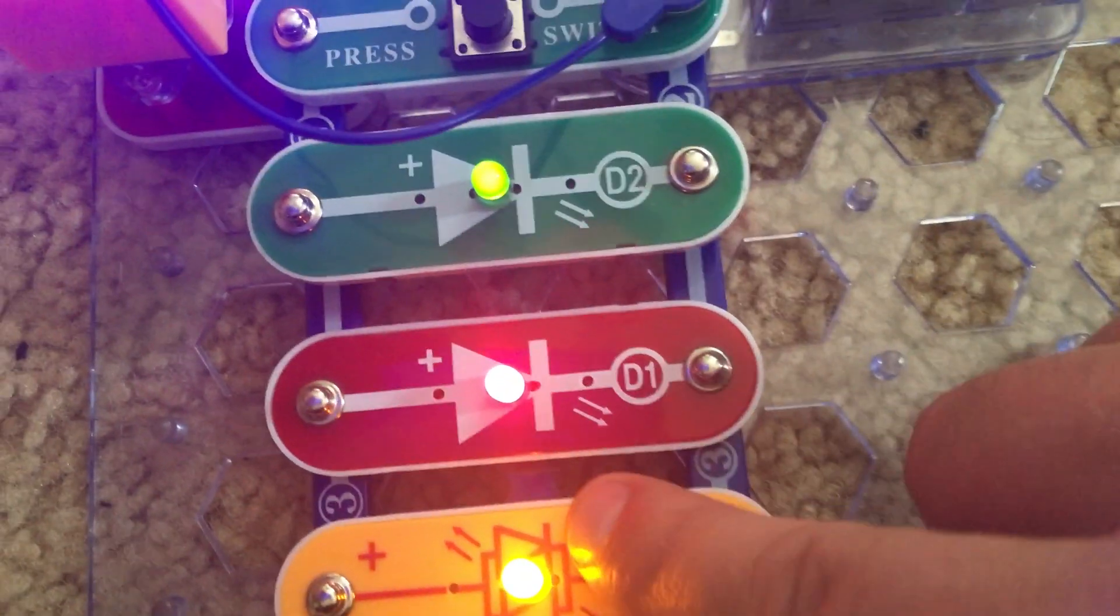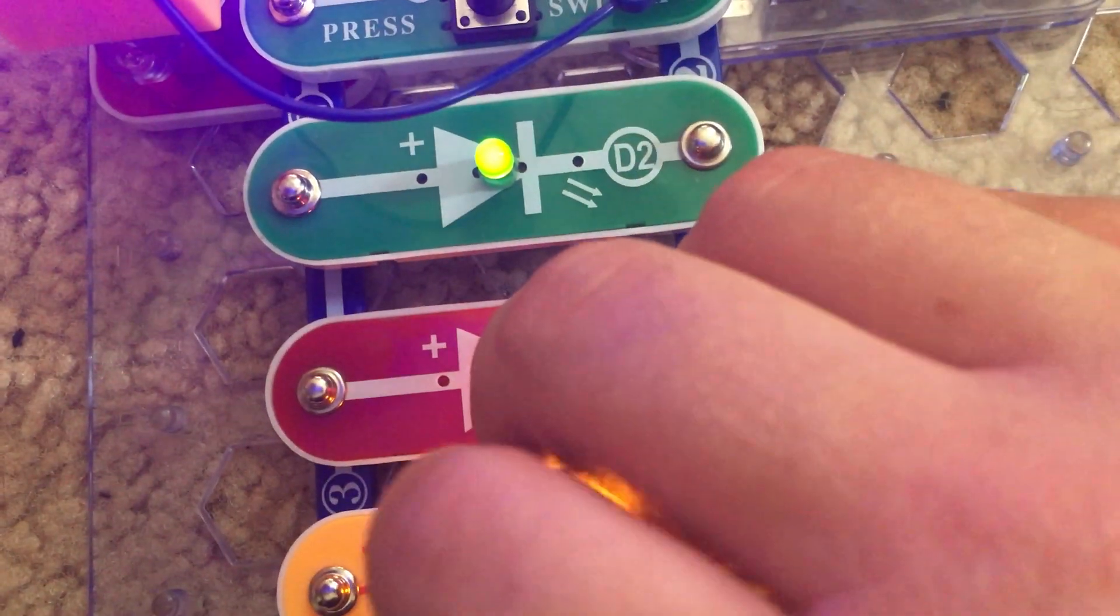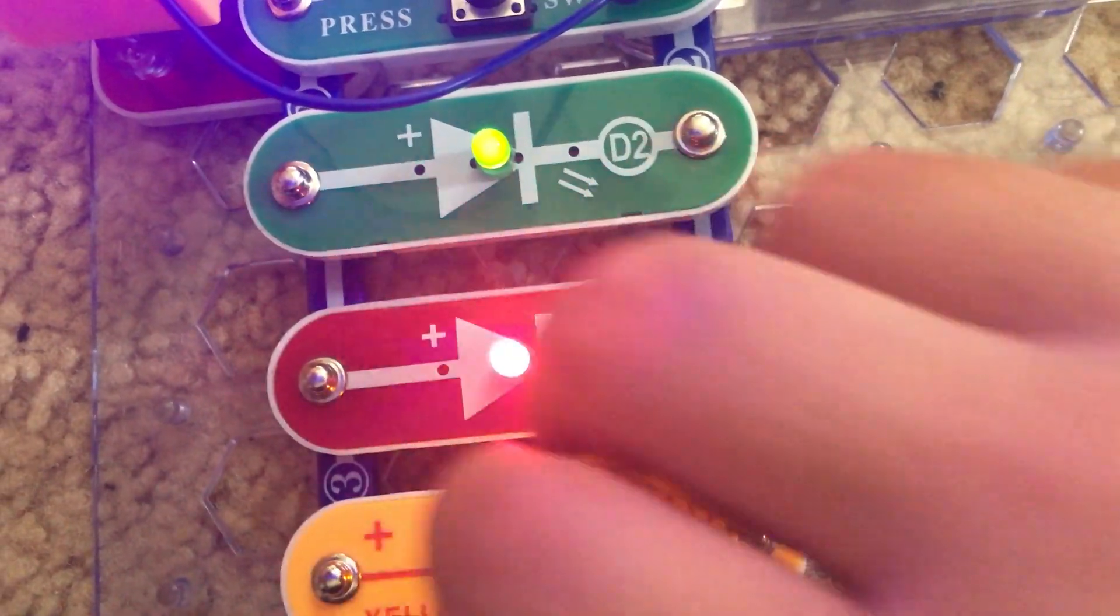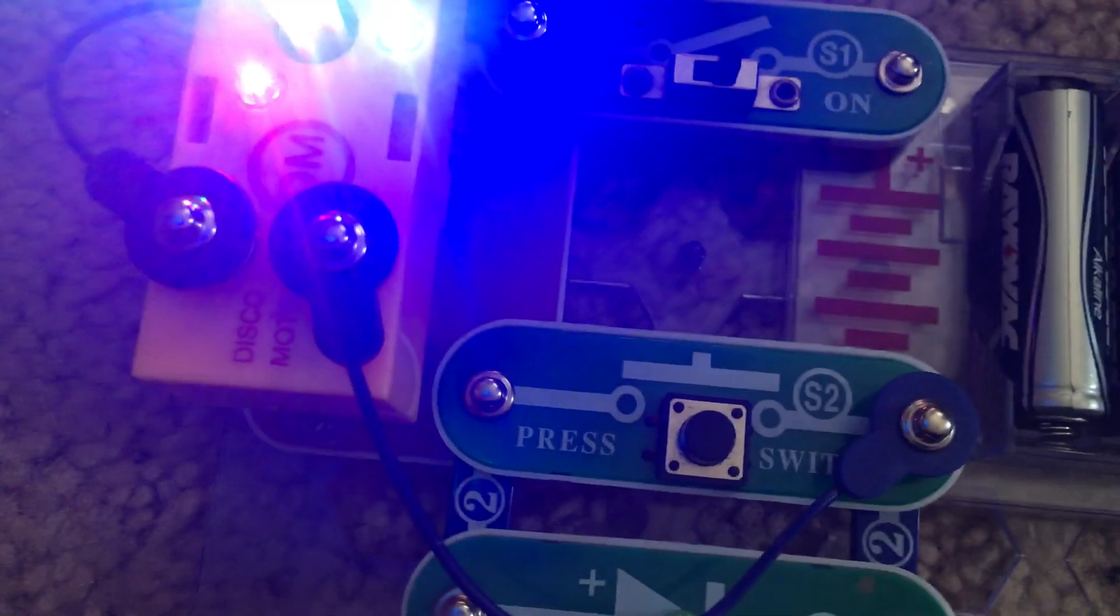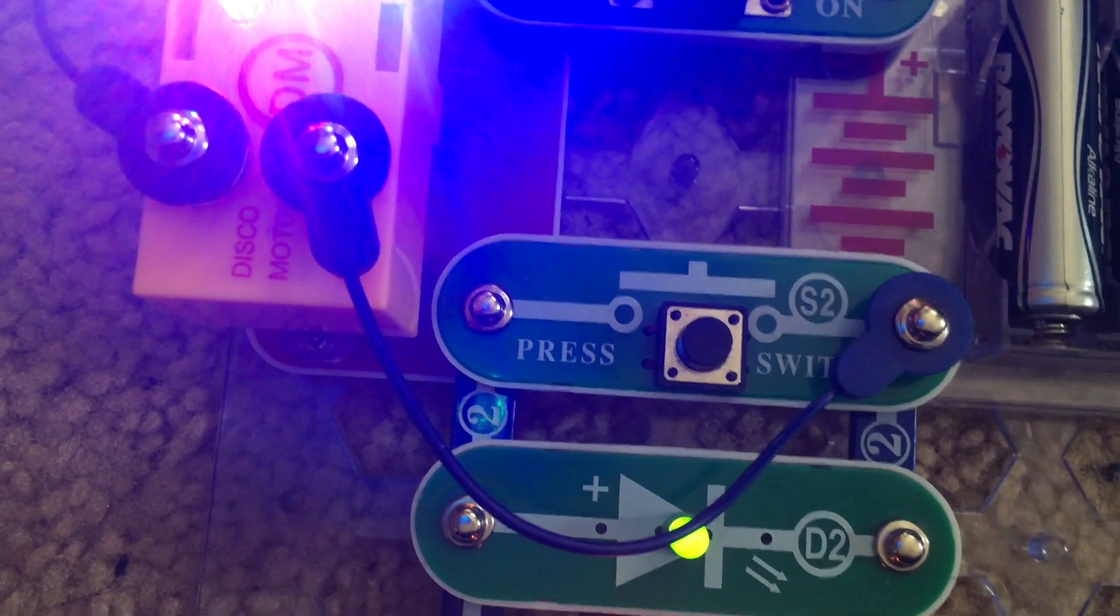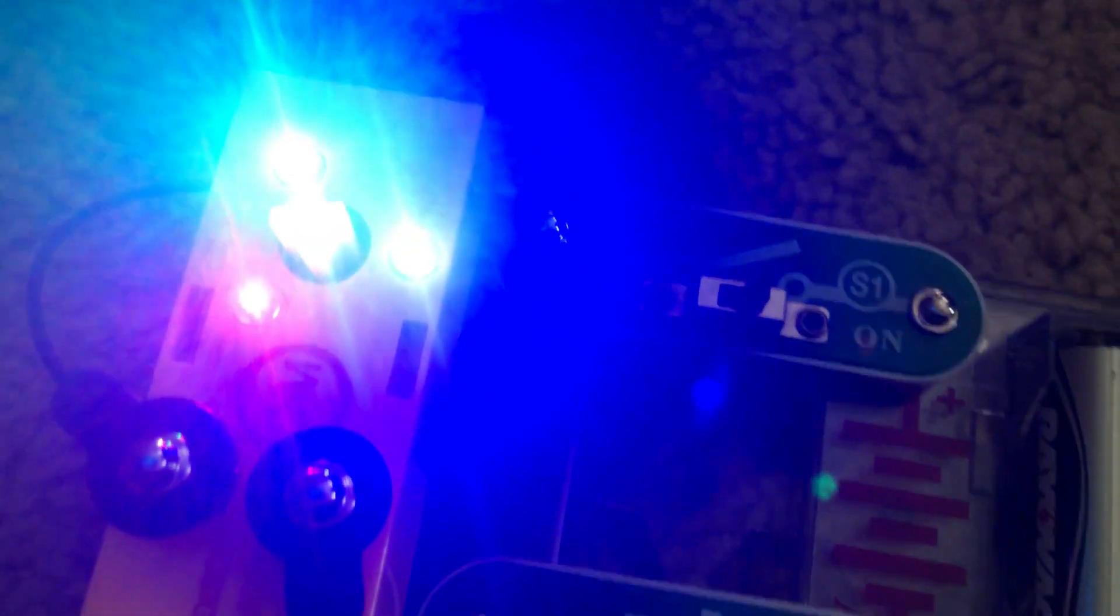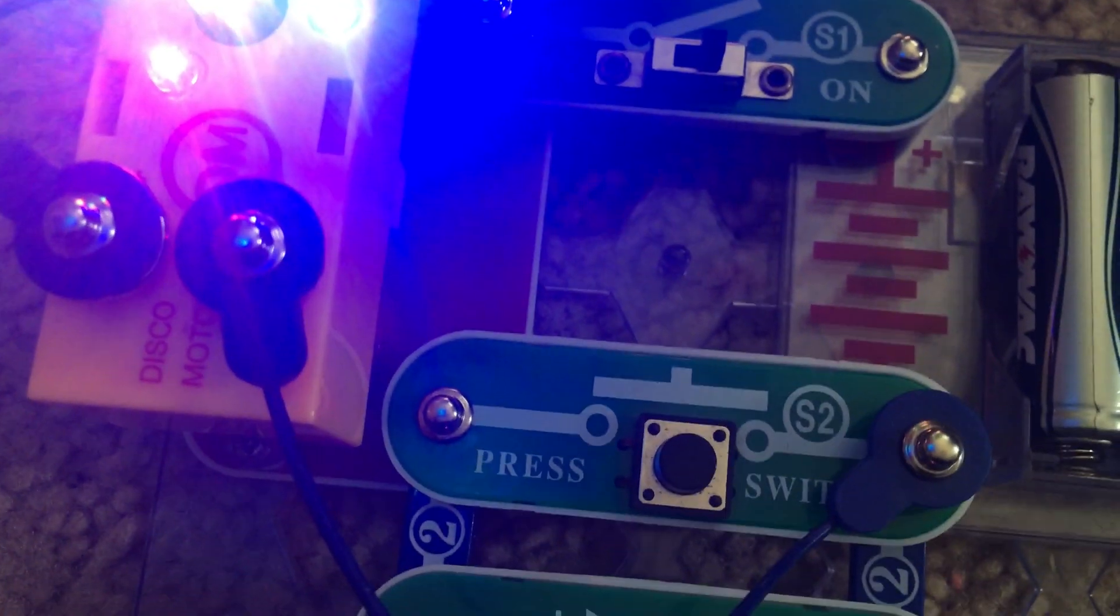The main LEDs are easier to see from the sides since they spread their light over a wide angle. However, the LEDs in the disco motor concentrate their light, so that's why they are brighter when you look directly at them.